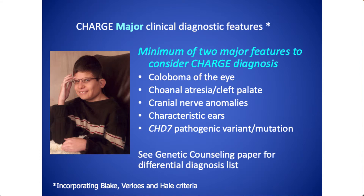The five C's are: coloboma of the eye, choanal atresia or cleft palate, cranial nerve anomalies, characteristic ears, and CHD7 pathogenic variant or mutation. A pathogenic variant is the term that in genetics we have evolved to use for what we previously referred to as mutations — they are changes in the DNA. Those terms are fairly interchangeable.